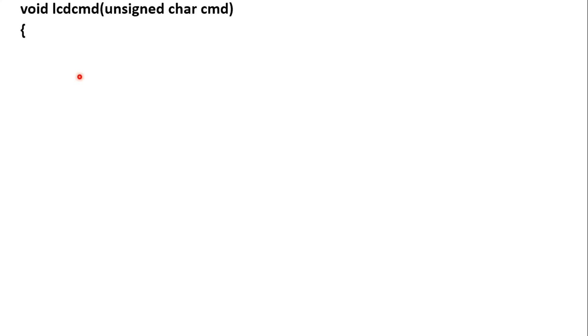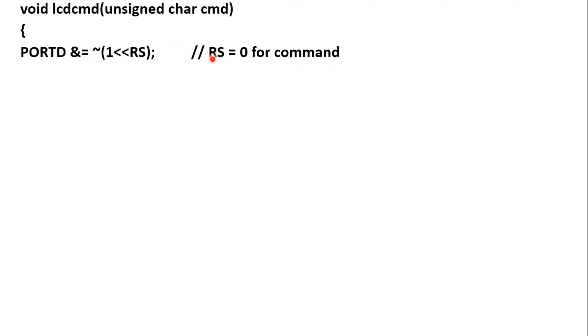The first function is void LCD_CMD(unsigned char cmd). Whenever this function is called, we pass the command as a parameter — for example, LCD_CMD(0x01) to clear the LCD. Inside the function, we first make RS = 0 because we are dealing with a command, not data. This is done by writing: PORTD &= ~(1 << RS). Since RS is defined as 5, this means 1 is shifted left 5 times.